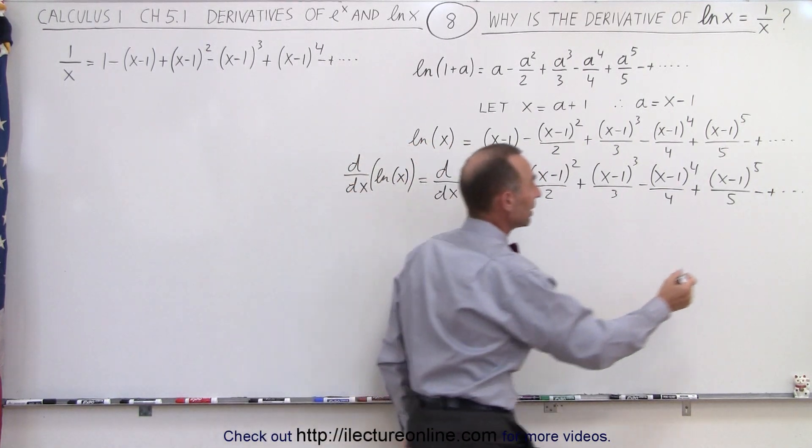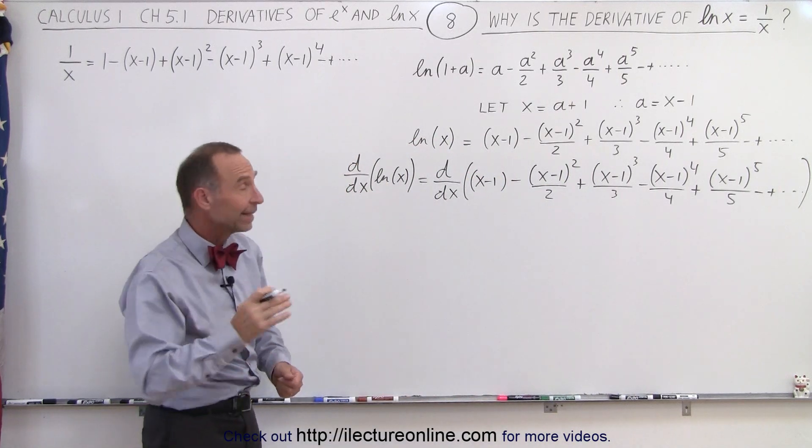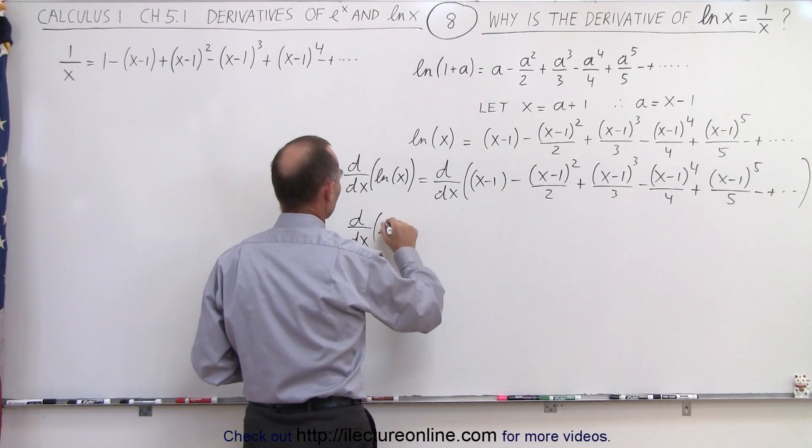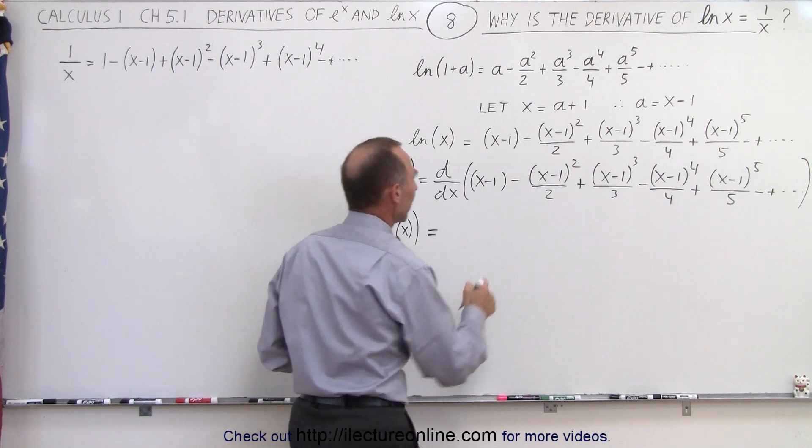So now let's open, I guess I need a parenthesis on the other side. Now let's go ahead and take that derivative and see what we get. So the d dx of the natural log of x is now going to be equal to the derivative of that.